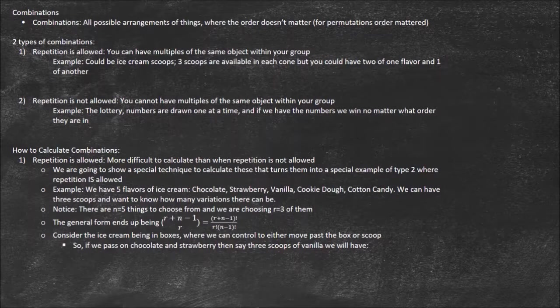They might draw five two-digit numbers, and if you have those five, you win the lottery. It doesn't matter if you had them in that order. It's a combination without repetition because once a ball comes out of the lottery, it doesn't go back in — you can't have 75 and 75; it's got to be some other number.